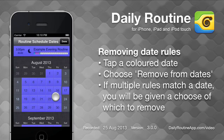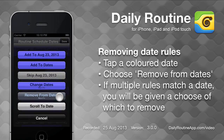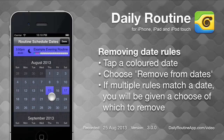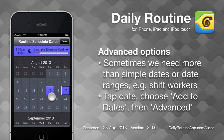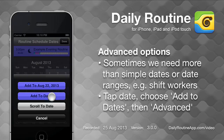We can remove a date rule by tapping one of the dates it covers and selecting Remove From Dates. If we need to create a more complicated schedule, we tap a date, then choose Add to Dates, then choose Advanced.